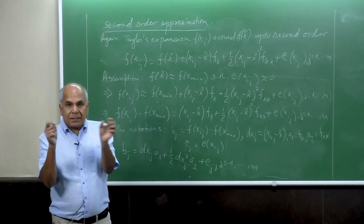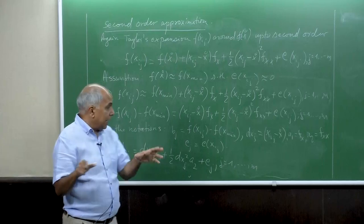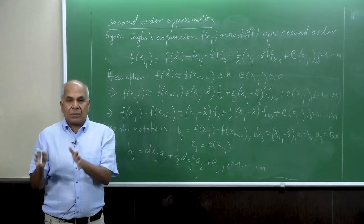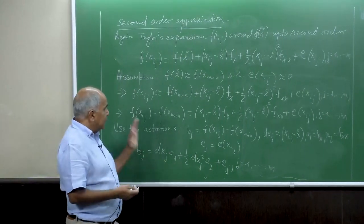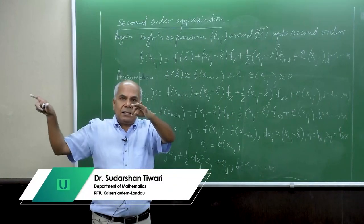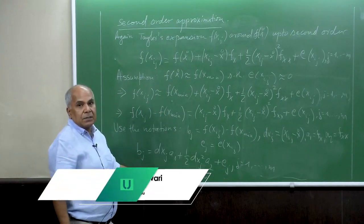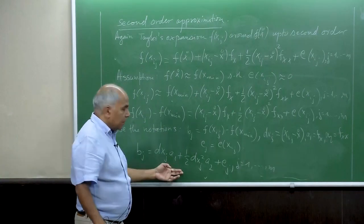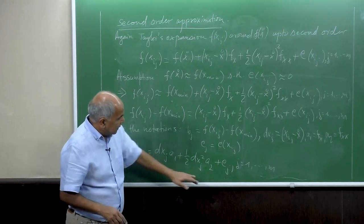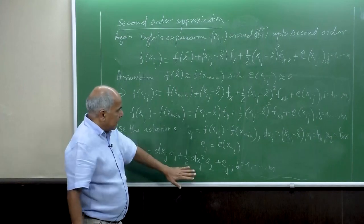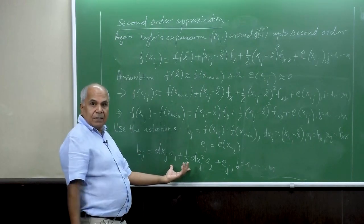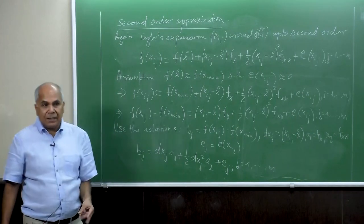Since j runs up to m and we have two unknowns, we need at least two neighbors. We choose the neighbor search radius to be about three times delta x, so we always get more than two neighbors — giving an overdetermined system. We solve this overdetermined system by minimizing the squared error. In the upcoming lecture, I will show how to minimize this and what type of matrix we get in the second order case. Thank you for today.